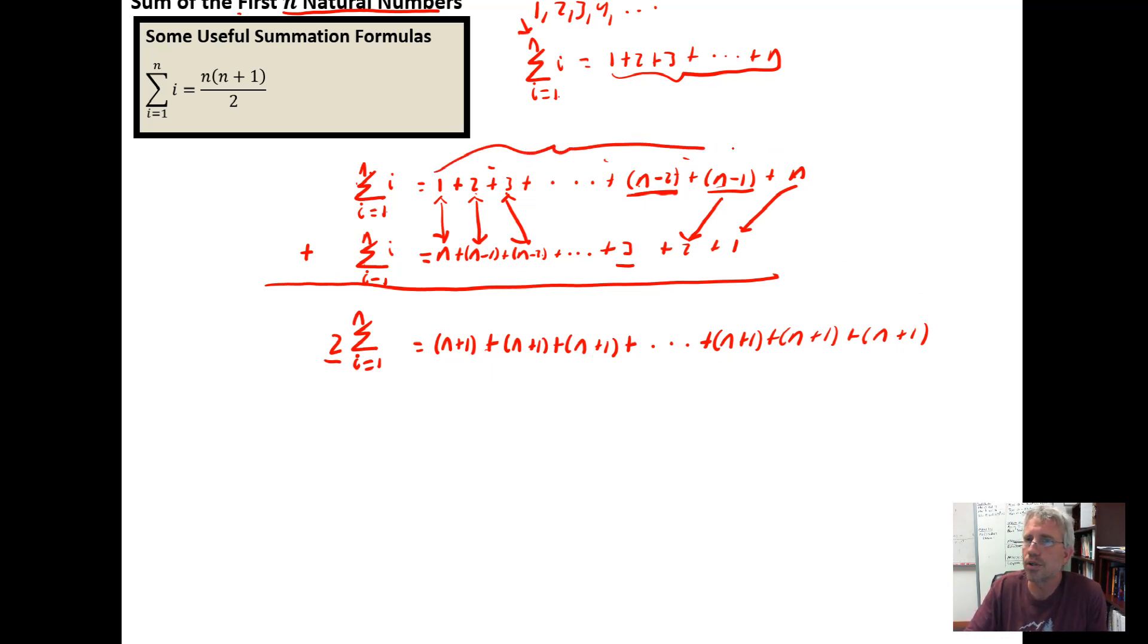Well, there are n terms in this sequence. There are n terms. So this is a repeated addition of n plus 1, n times, and the shorthand for repeated addition of natural numbers is multiplication. So this is the same as the n terms times n plus 1 gives you this repeated addition.